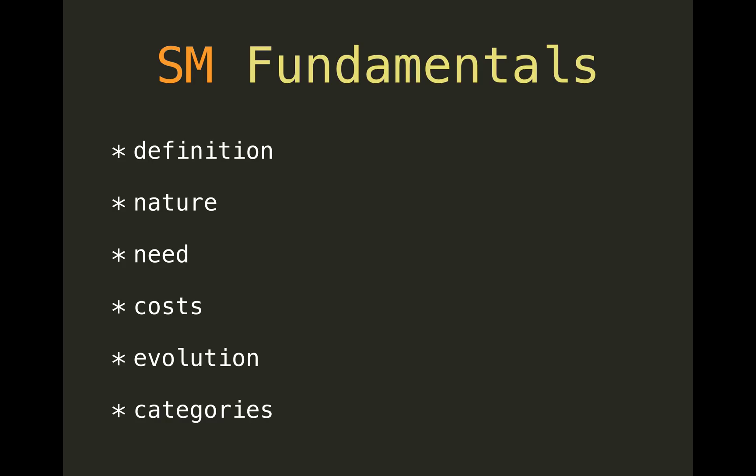The categories of maintenance — traditionally there are four. Corrective maintenance is when you work towards fixing a problem. Adaptive maintenance is when you adapt to changed requirements or circumstances. Perfective maintenance is when you make things better because you have reasons to. And preventative maintenance is when you anticipate one of the other three problems arising in the future and act before it becomes a real problem.